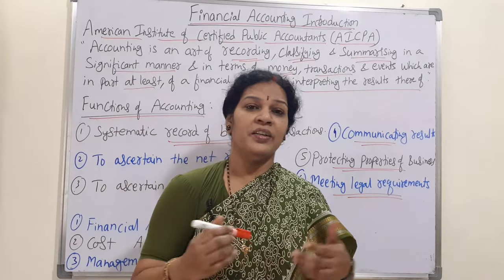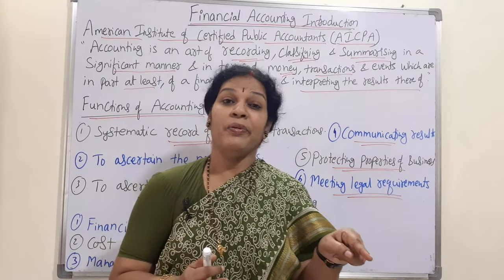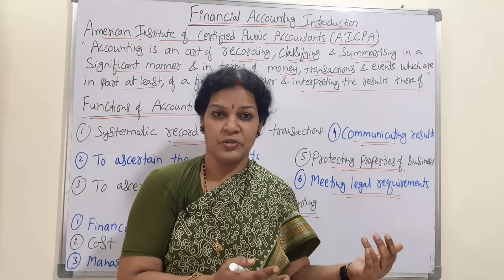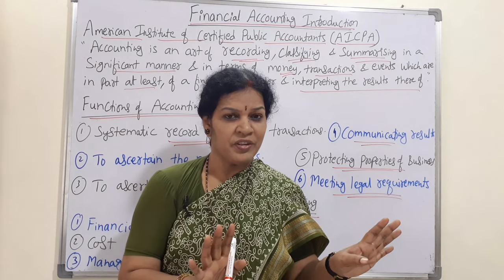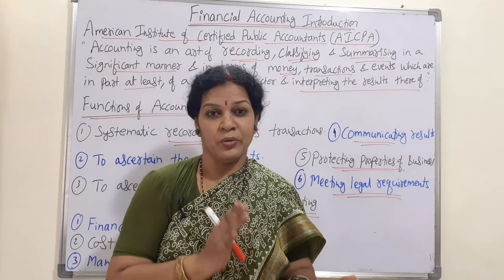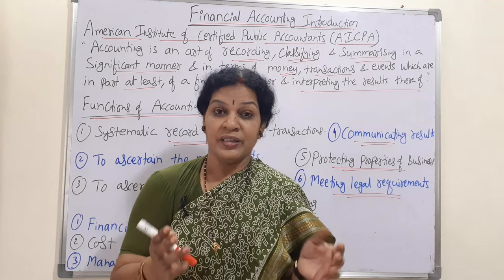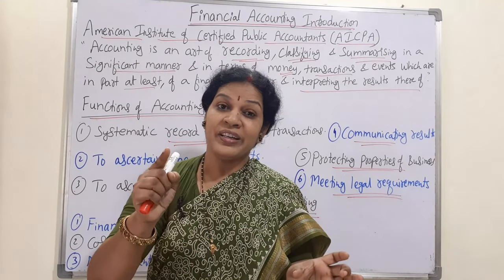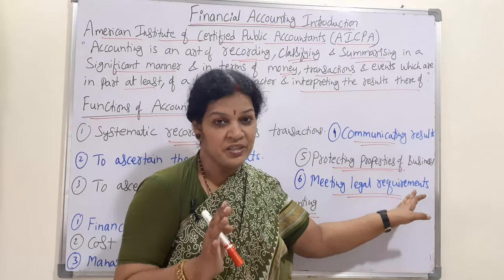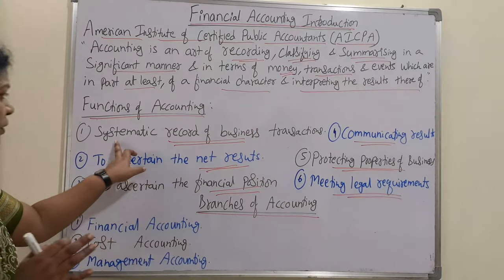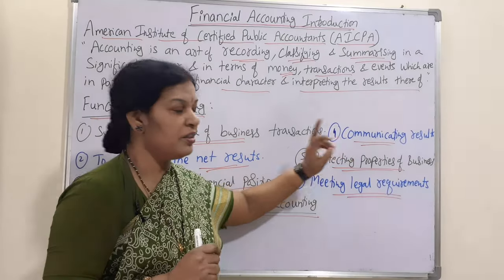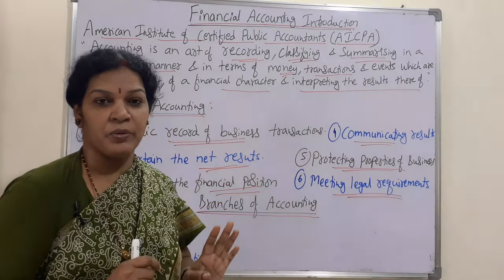Meeting legal requirements means that if we maintain proper accounts, it is helpful in many ways. For example, if I want to take a loan, I can show properly maintained accounts to a bank or financial institution, and if audited by an auditor, they will sanction the loan without hesitation. Also, for paying tax every year, properly maintained and audited accounts are very useful for tax officers. So the six functions are: systematic record of transactions, ascertaining net results, ascertaining financial position, communicating results, protecting properties, and meeting legal requirements.